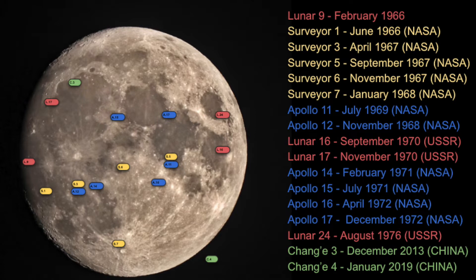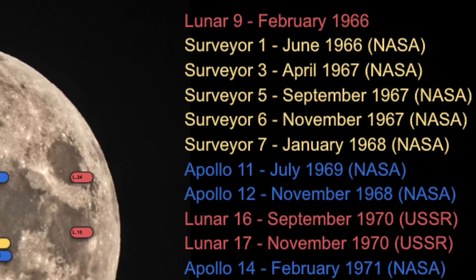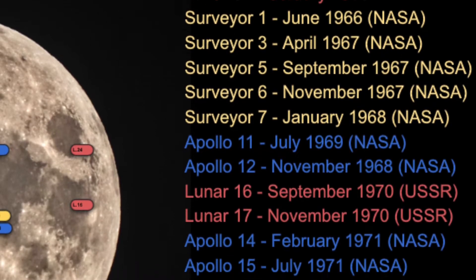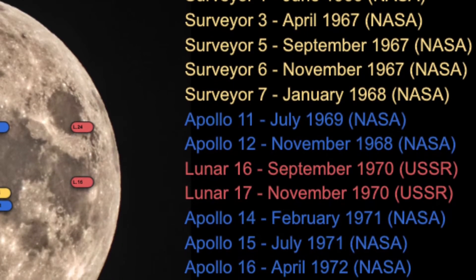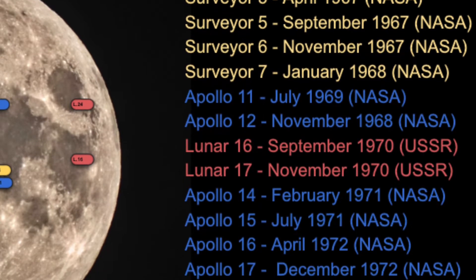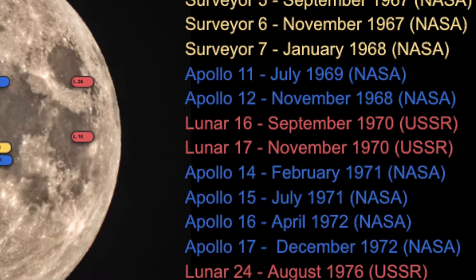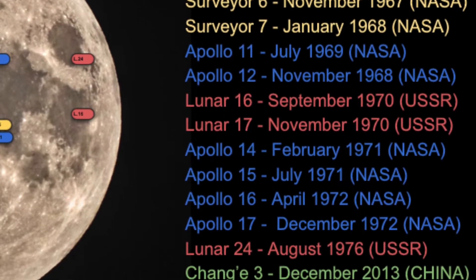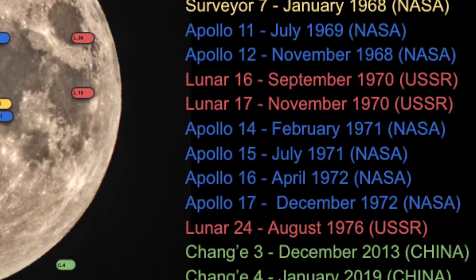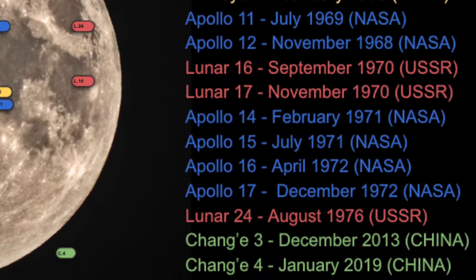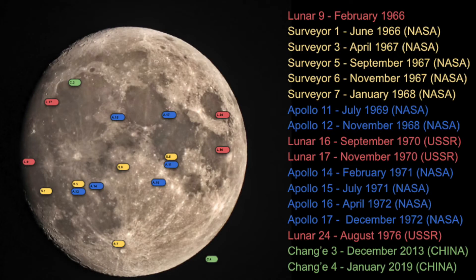The image is quite self-explanatory; however, it is interesting to see all of the lunar landings together. On the right, I have added a legend color-coding each of the lunar landings and their program types or code names, along with the month and year of the landing.